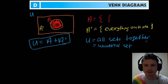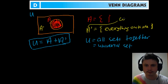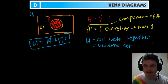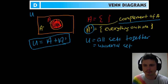For those of you whose mother tongue is non-English, A prime is also known as the 'complement of A.' If you see this word, this is what it means. So just make sure that you know what the complement of A means — A prime is basically the complement of A.